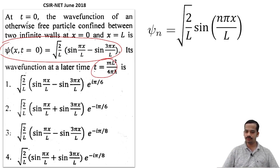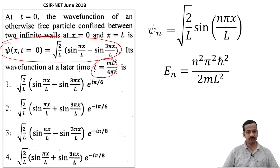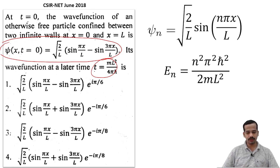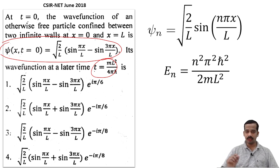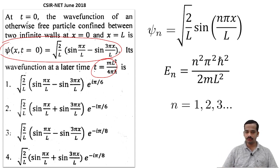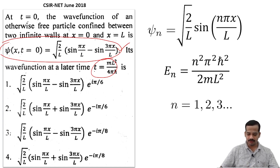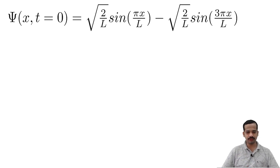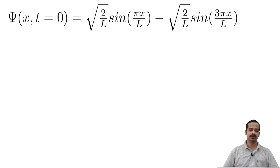The first thing we need to do is collect energy eigenstates and energy eigenvalues. For a particle in a box confined between x equal to 0 to x equal to L, energy eigenstates are root of 2 by L times sin(n pi x by L), and energy eigenvalues are n-squared pi-squared h-bar-squared by 2mL-squared, where n equals 1, 2, 3, and so on. Now the state at t equal to 0 is already written in terms of energy eigenstates.